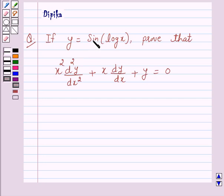if y is equal to sin of log x, prove that x square into d square y over dx square plus x into dy by dx plus y is equal to 0.